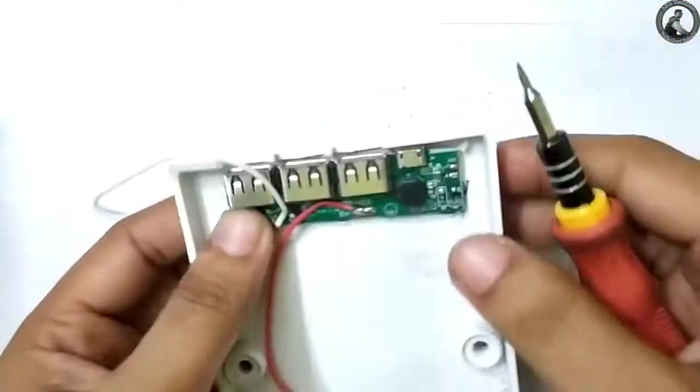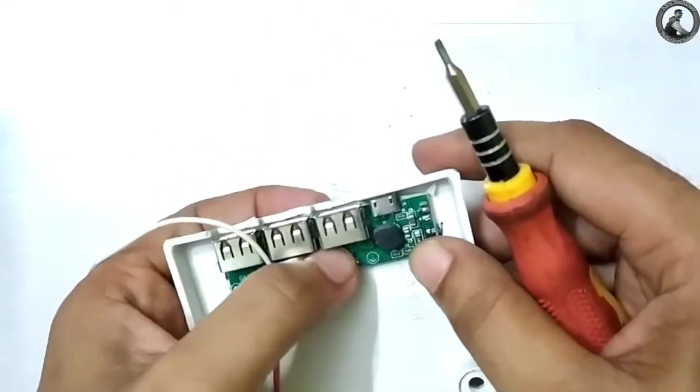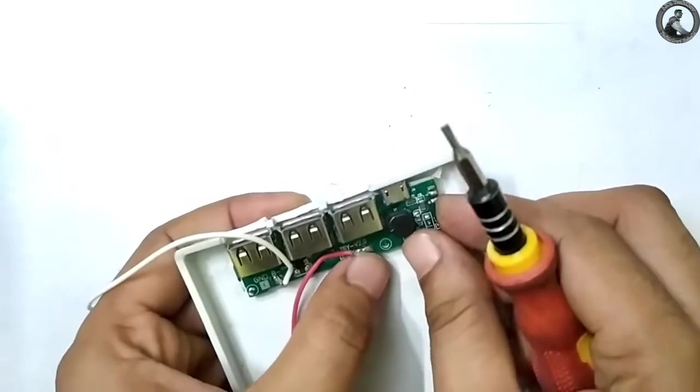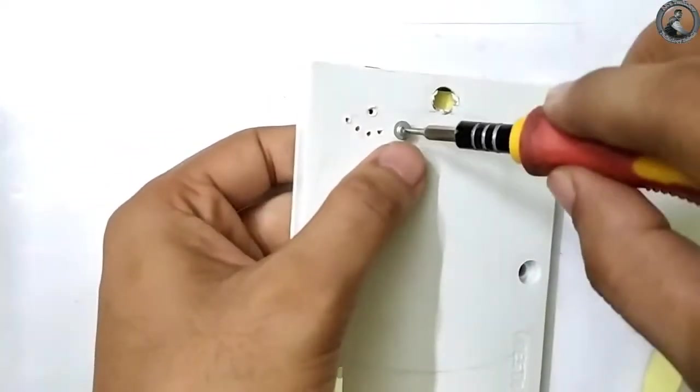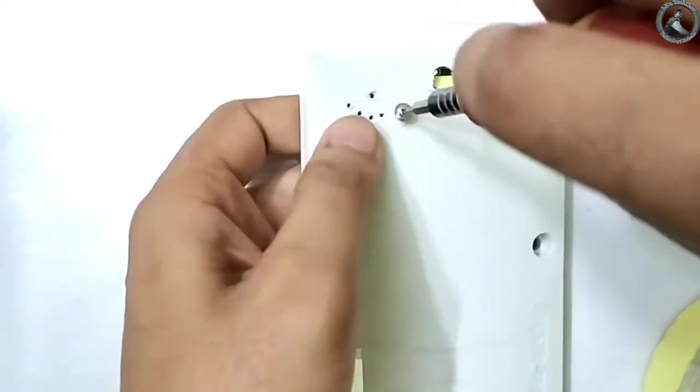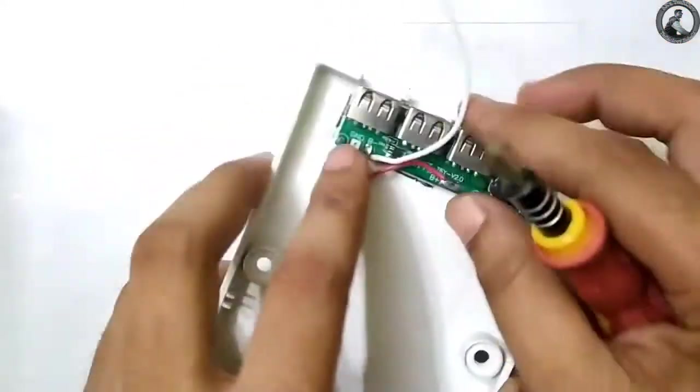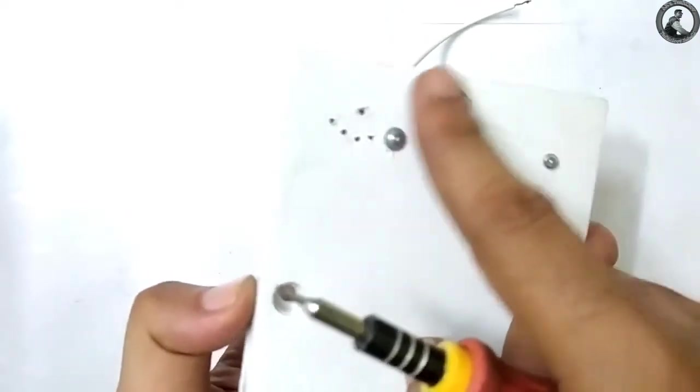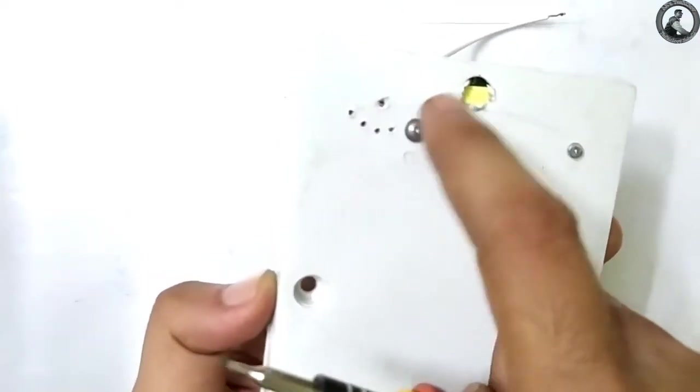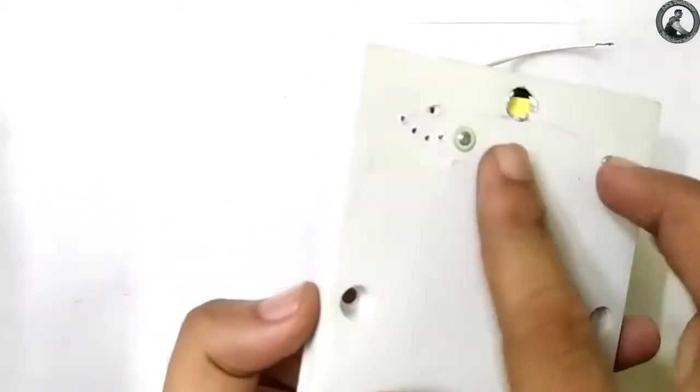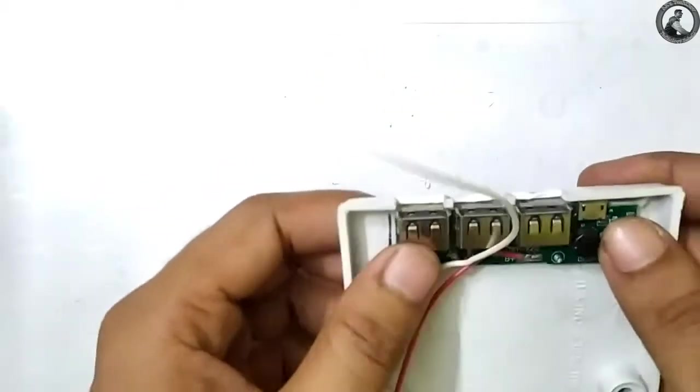For properly placing the circuit, I just put some double-sided tape underneath the circuit board and placed it firmly with the help of these two screws. As you can see here, I drilled five holes. The top one is to power on the power bank and the last four are to see the available battery percentage through the LEDs fitted on the circuit board.